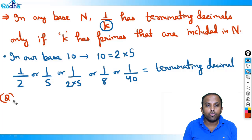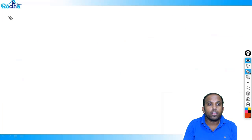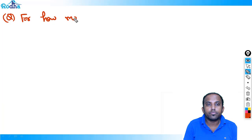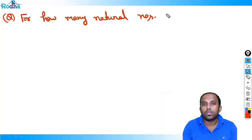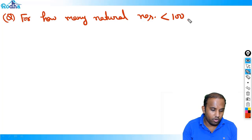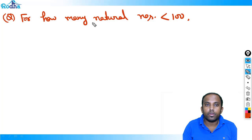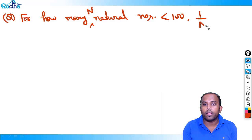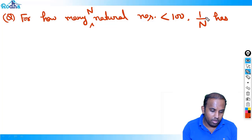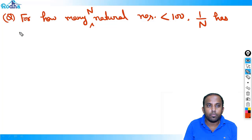Let's do a question: for how many natural numbers n less than 100 does 1/n have terminating decimals?